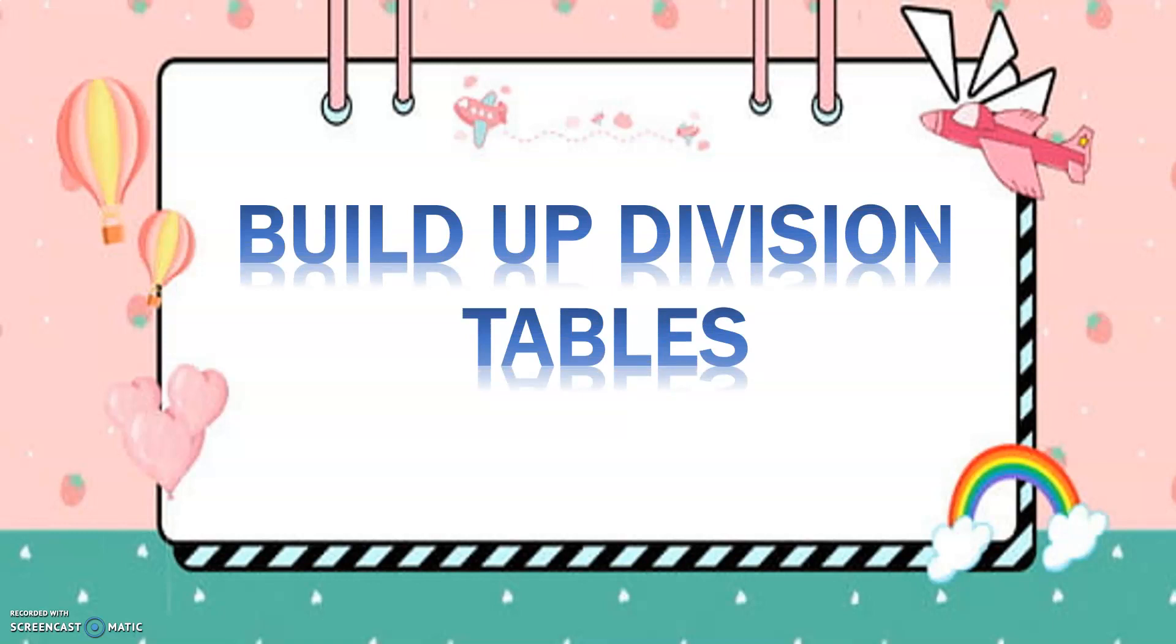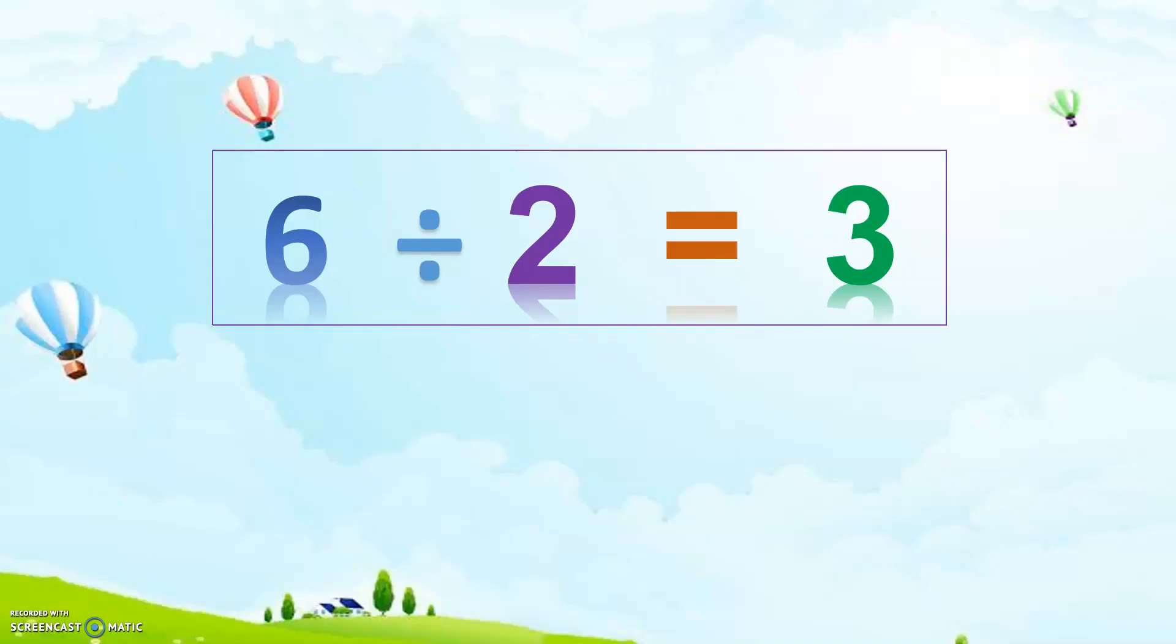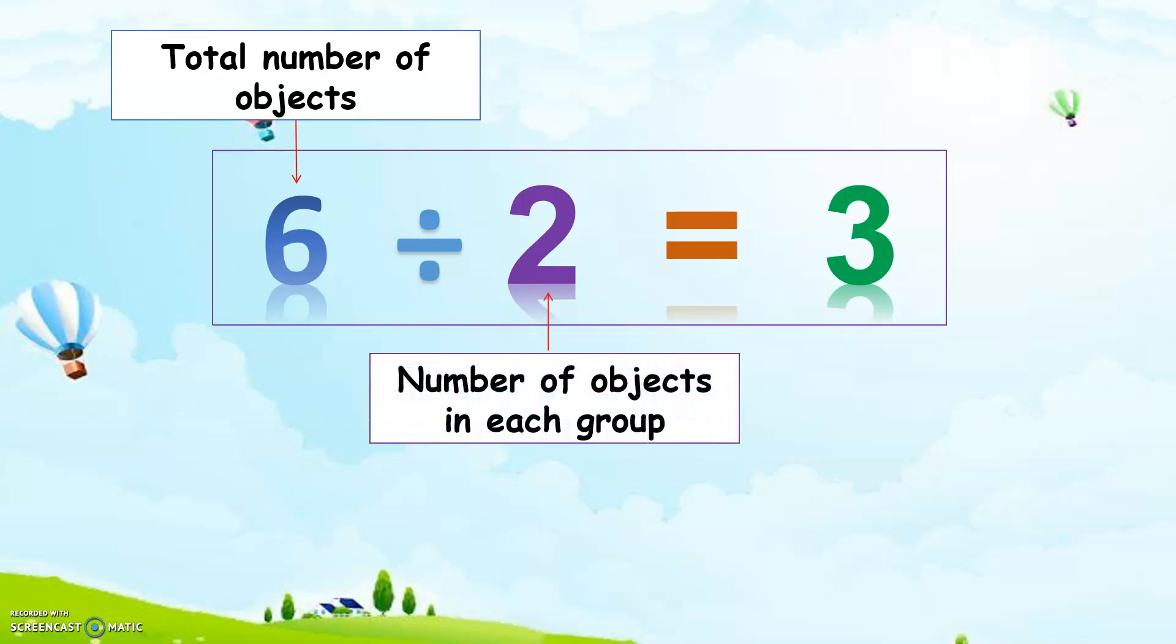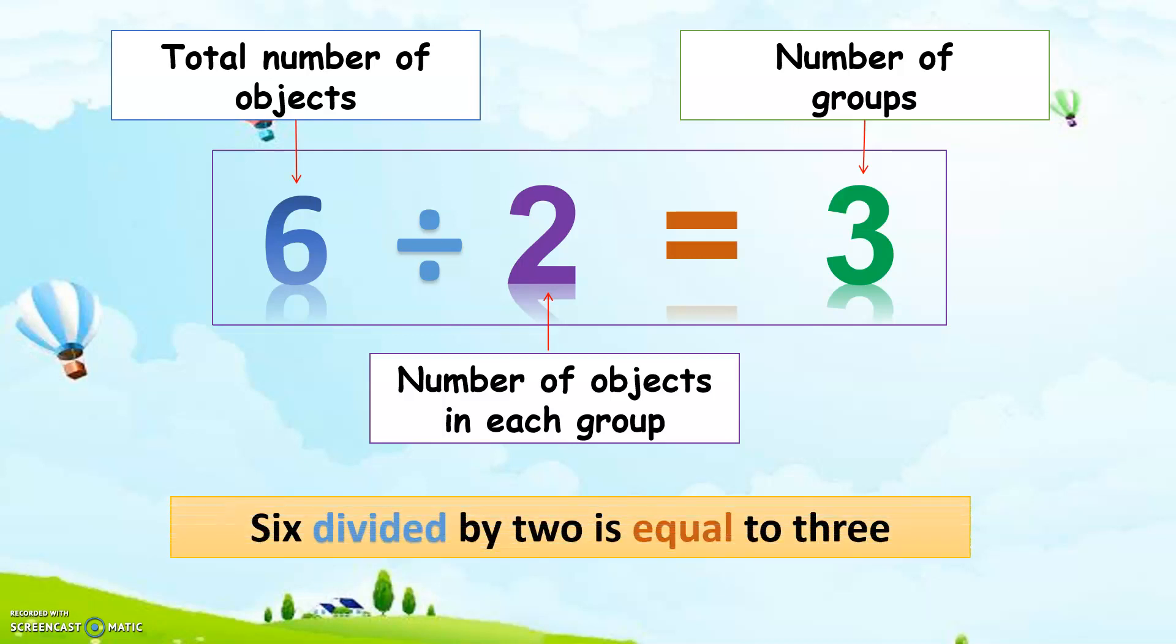We will learn how to build out division tables. 6 divided by 2 equals 3. 6 is the total number of objects, 2 is number of objects in each group, 3 is number of groups. We will read the number sentence as 6 divided by 2 is equal to 3.